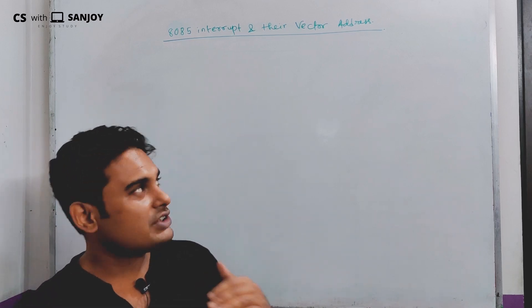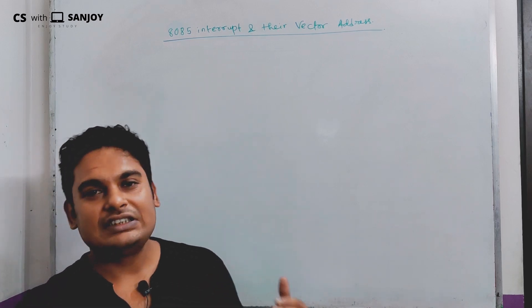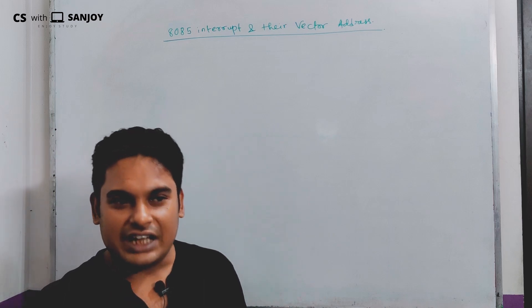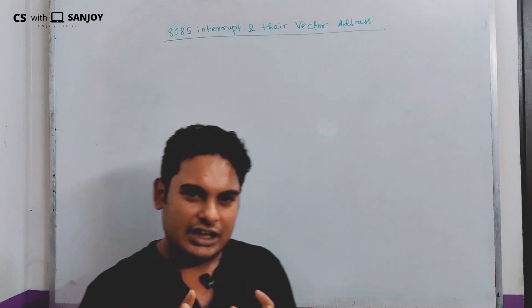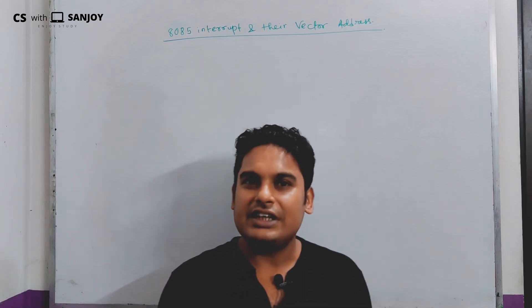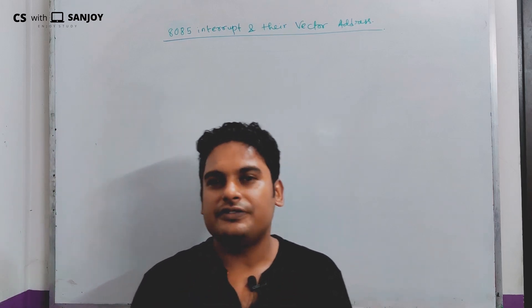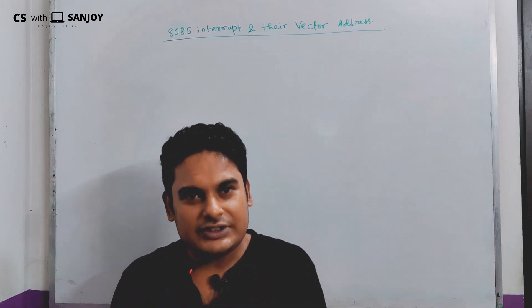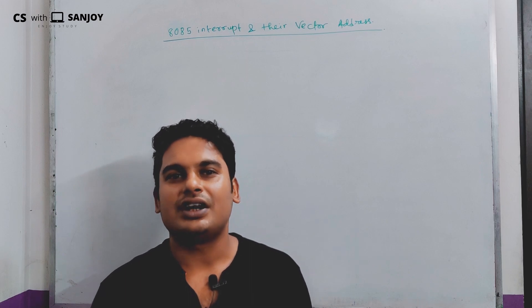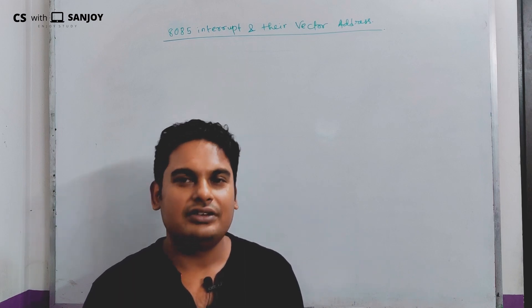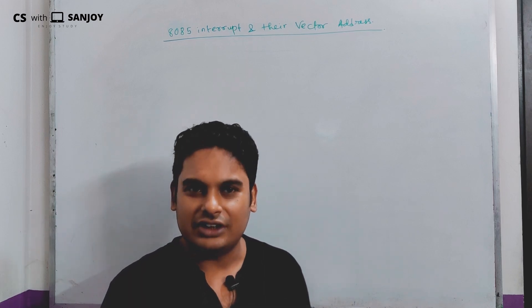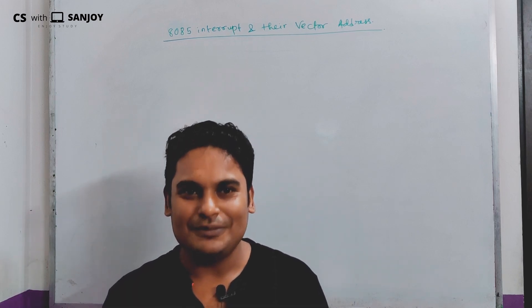Today we will learn the interrupt vector address. We know that the 8085 microprocessor has active RISC architecture — reduced instruction set computer.